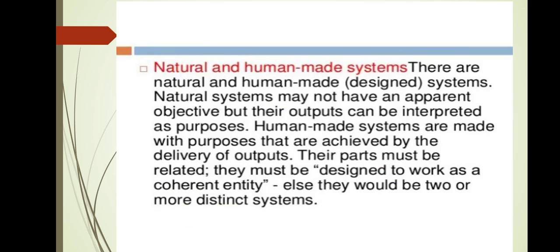Natural and human-made systems: systems designed by human beings are termed man-made systems. Natural systems may not have an apparent objective, but their outputs can be interpreted as purposes. Human-made systems are made with a purpose that is achieved by the delivery of outputs. Their parts must be related and designed to work as a coherent entity, otherwise they would be two or more distinct systems.